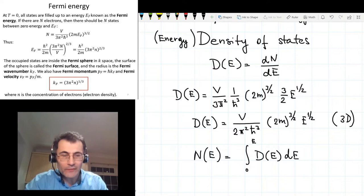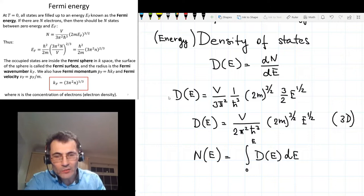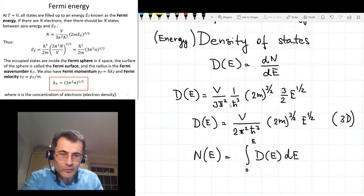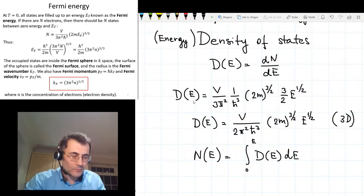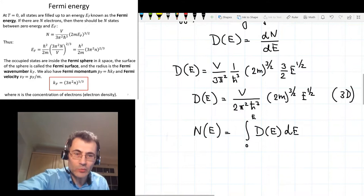And the last comment is on notations. As you see, the expression for the density of states as we derive it is proportional to the volume. Quite often in the textbooks and also in almost all research papers, when someone is talking about density of states, they usually mean density of states normalized per volume. So it's a density of states per unit energy per unit volume. Okay, so with all these remarks made, we can now move to our next subject, which is the Fermi energy.